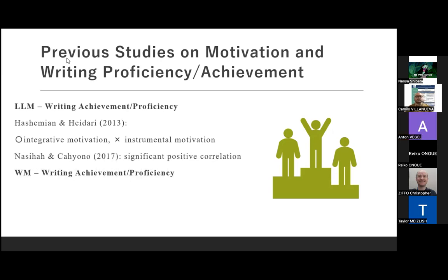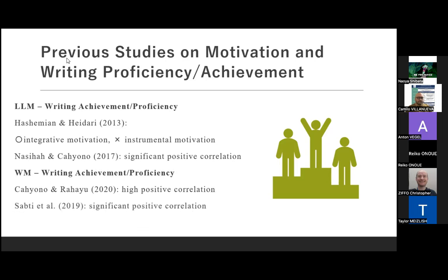However, Nashir and Kohiono in 2017 found a significant positive correlation between writing achievement and language learning motivation. Regarding writing motivation and writing achievement, Kohiono and Rahayu in 2020 found there is a high positive correlation between writing achievement and writing motivation. Subtitle also found a significant positive correlation between these two variables.